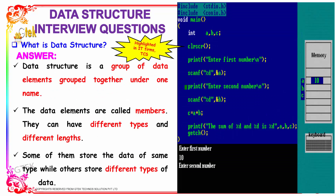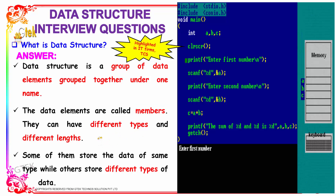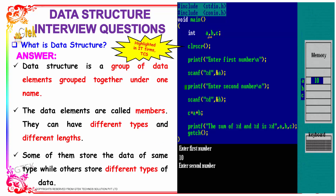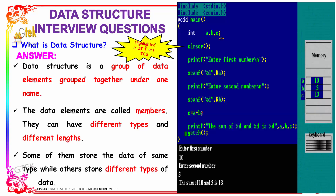Our first question is: what is data structure? Data structure is nothing but a group of data elements grouped together under one name. The data elements are called members and they can have different types and different lengths. Some store data of the same type while others store different types of data. Here, a, b and c are of the same data type, that is of type int, so we can assign it in a single declaration as int abc. This is known as data structure.